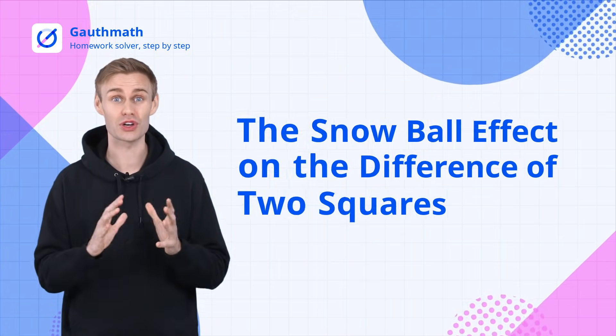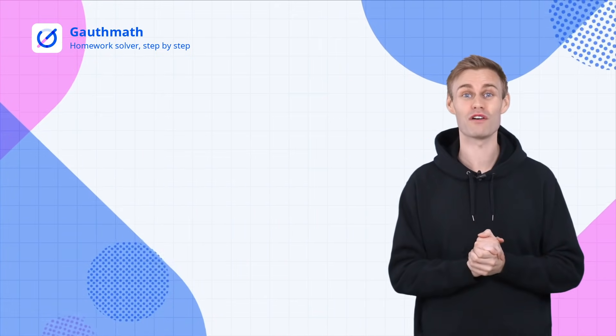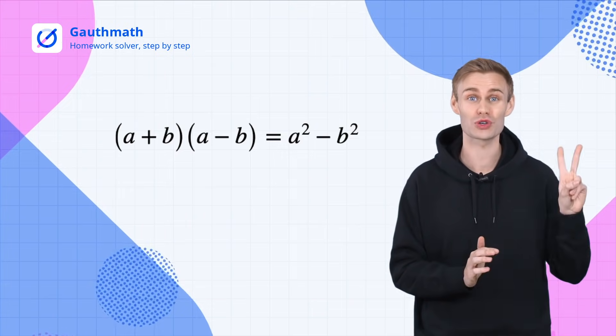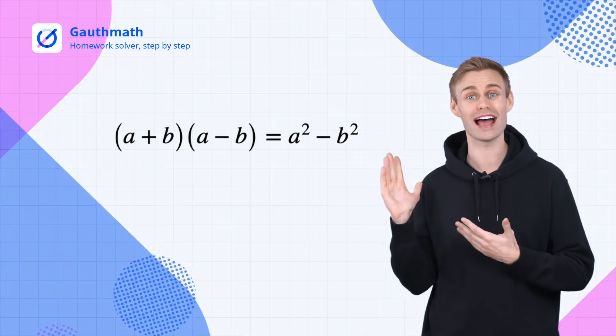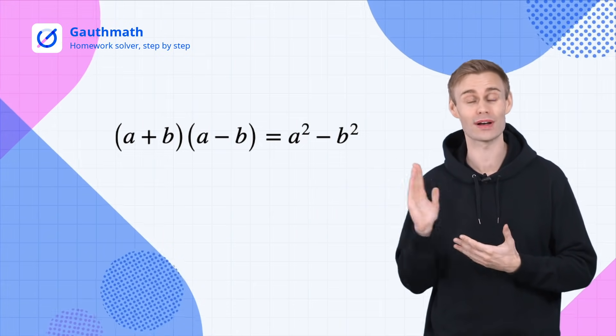Before we jump to the snowball effect let's make sure that you are familiar with the difference of two squares. A plus B times A minus B equals A squared minus B squared.